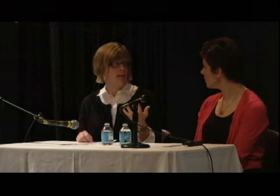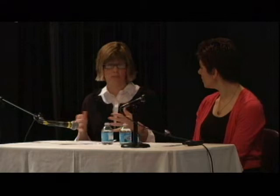If a child can access a device with their hand, a switch, through eye gaze, or through a head tracker — which is like a dot on the forehead — we need a device that can do that. I look at whether they respond well to a motor plan. Some children respond better to a setup that's categorized, color-coded, or uses what we call a visual scene — an actual picture of the classroom, lunchroom, or park — versus things being in different categories. We look at access and the language system used.